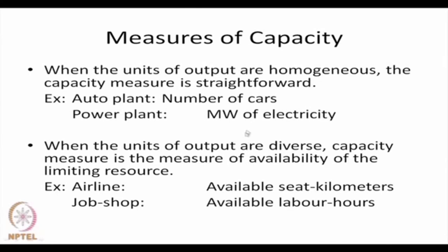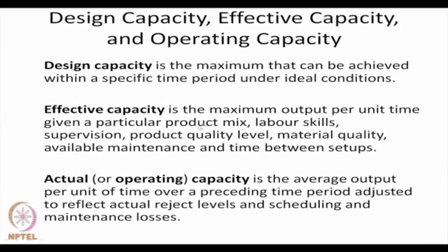Both measures are used in practice. We are not only considering manufacturing plants — airlines provide a service whereas auto plants, power plants, and job shops are manufacturing units. In this context, we can define three forms of capacity: one, design capacity; two, effective capacity; and three, actual or operating capacity.